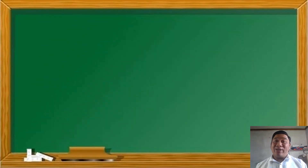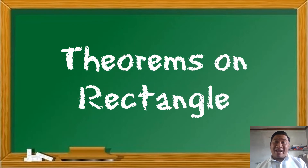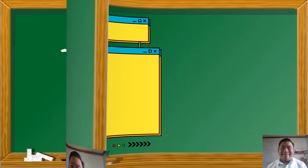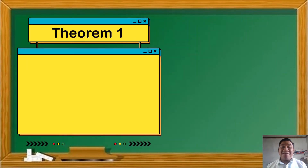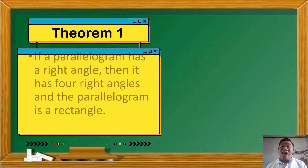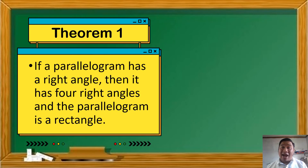Last week, we talked about the different kinds of parallelogram, and one of which is rectangle. We defined rectangle as a parallelogram with four right angles. Now, let's have the theorems on rectangle. Theorem number one: if a parallelogram has a right angle, then it has four right angles, and the parallelogram is a rectangle.